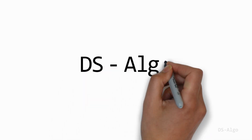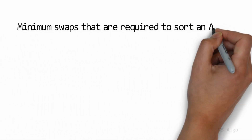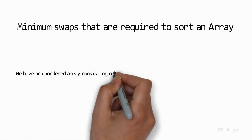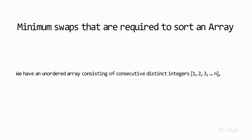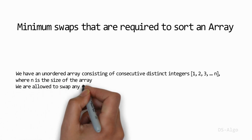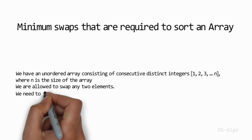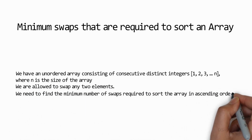In this video, I am going to discuss the efficient solution to find the minimum swaps required to sort an array. We have an unordered array consisting of consecutive distinct integers, that is 1, 2, 3 up to n, where n is the size of the array. We are allowed to swap any two elements. We need to find the minimum number of swaps required to sort the array in ascending order.